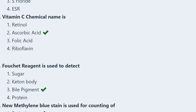Next: The chemical name of Vitamin C is — retinol, ascorbic acid, folic acid, or riboflavin? The correct answer is option 2, ascorbic acid. Folic acid is known as Vitamin B9.